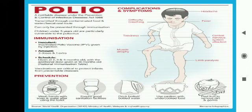Complications and symptoms include headache, fever, difficulty breathing, tightness, muscle atrophy, central nervous system attack, and limb paralysis — the most common symptoms of poliomyelitis. Prevention includes washing hands with soap and water after using the toilet, ensuring good sanitation facilities, drinking boiled or bottled water, using caution with undercooked food, and peeling fruit to remove dirt and germs. By following proper hygienic habits, we can prevent this disease.